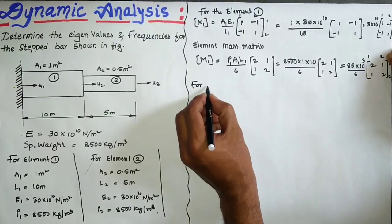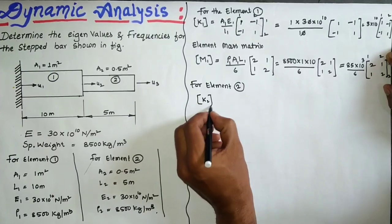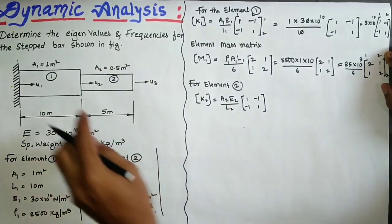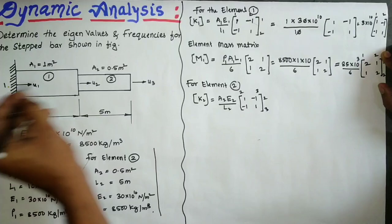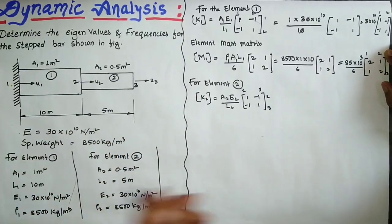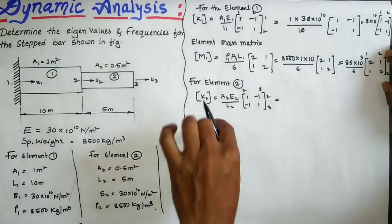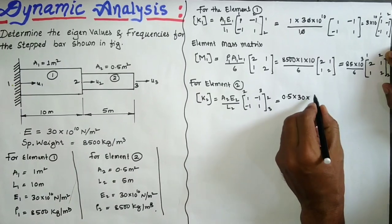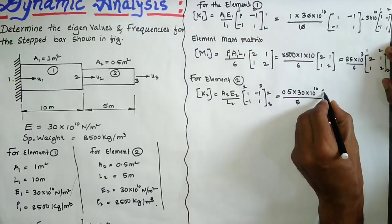Similarly for element 2, K2 = (A2·E2/L2) × [1 −1; −1 1], with nodes 2 to 3. Substituting A2 = 0.5, E2 = 30×10^10, L2 = 5 m, we get K2 = 3×10^10 × [1 −1; −1 1], covering nodes 2 and 3.